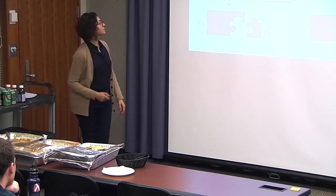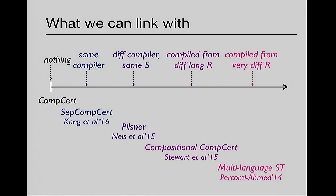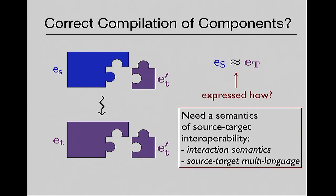I call this source-independent linking. Our compiler correctness theorems should support this, not just horizontal compositionality, otherwise you'll constantly find yourself needing to come up with an ES prime for a given ET prime. Fortunately, the next two results do support source-independent linking. So let's see how that works — compositional CompCert and our multilanguage semantics work.